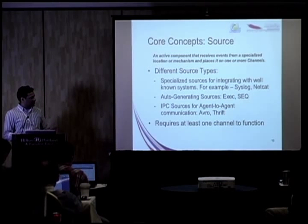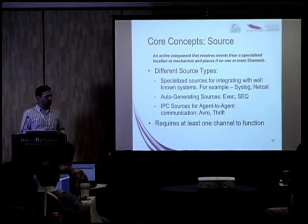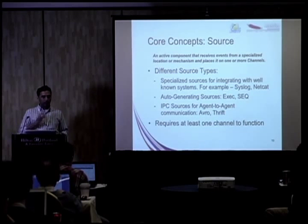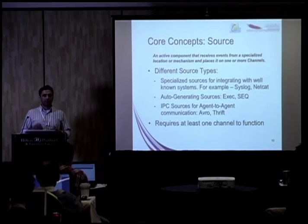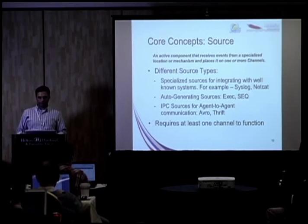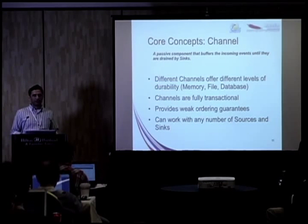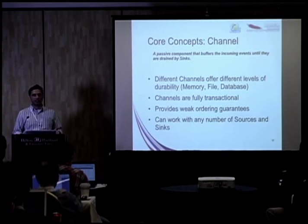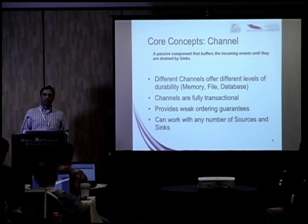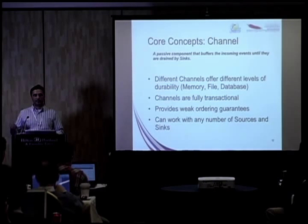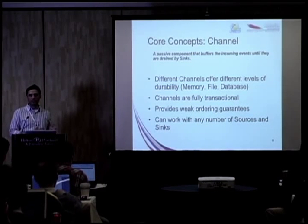There are a couple of IPC sources that Flume comes with. One is Avro; Thrift is not yet in any upstream releases but should be in the next release. The source requires at least one channel to function — a channel is a buffer that the source writes to. There are different types of channels, and all of these components are basically interfaces you could extend. Essentially a channel is a double-ended transactional queue: sources write into the tail using transactional semantics and sinks drain the queue. This gives you the classic producer-consumer model.